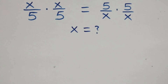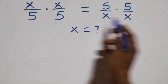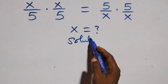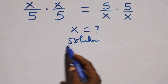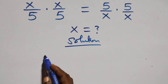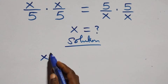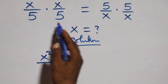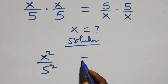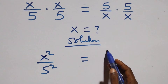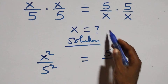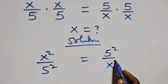Hello, you are welcome. How to solve this nice exponential equation. What we have here: write x times x, that's the same thing as x squared, over five times five, which is five squared, equals five times five, that's five squared, over x times x, which is x squared.